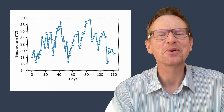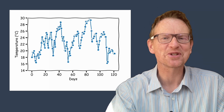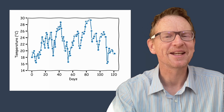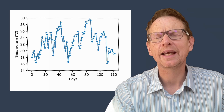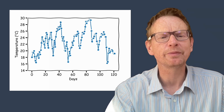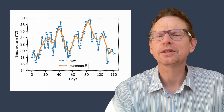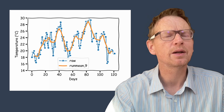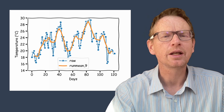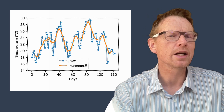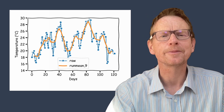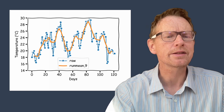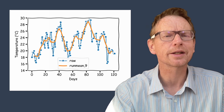Let's take this example of a temperature series lying right behind me. What we want to do is calculate a smooth mean such as in this example where we have a running mean of a nine day window. Great, it looks easy at first. So how does this actually work?